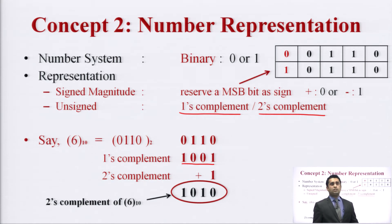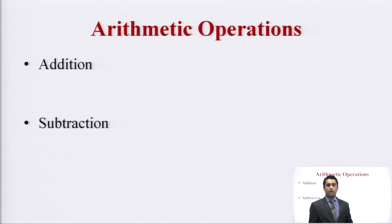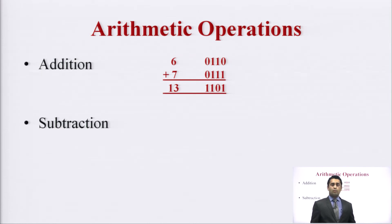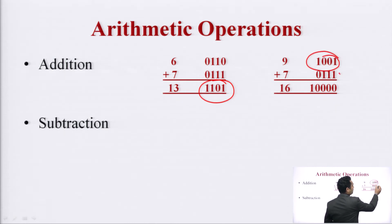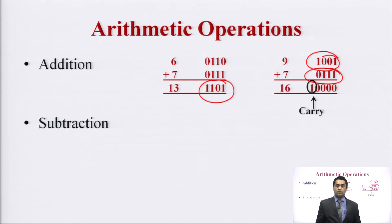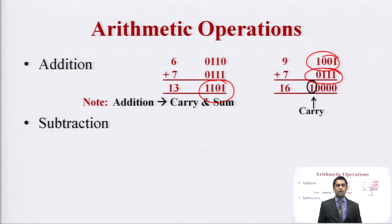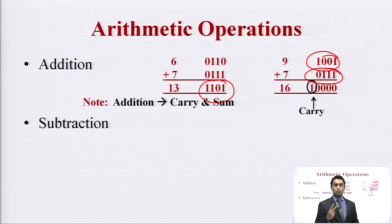Let us see how these complement methods are used in addition and subtraction. For addition, taking two numbers in decimal and their equivalent binary representations, two 4-bit binary numbers are added and the result fits in the same 4 bits. In a second case, adding two 4-bit numbers gives a result in 5 bits — this extra bit is known as carry. So addition is a combination of carry and sum: whenever we give inputs A and B, the result has two parts — carry and the magnitude.